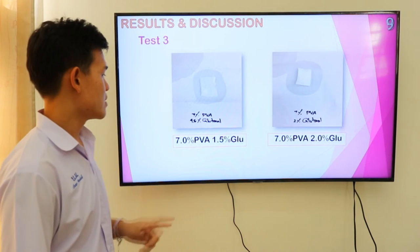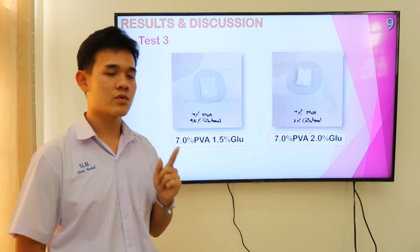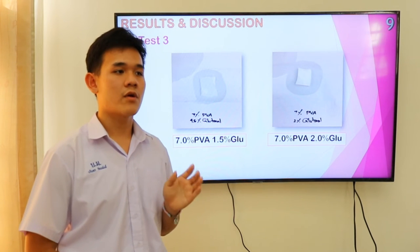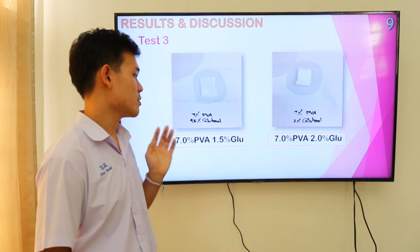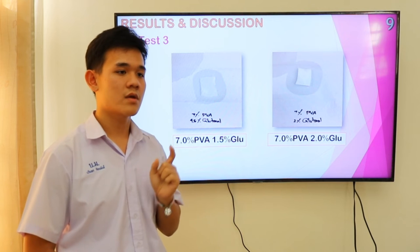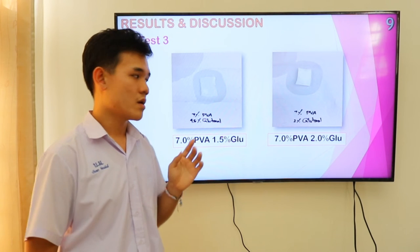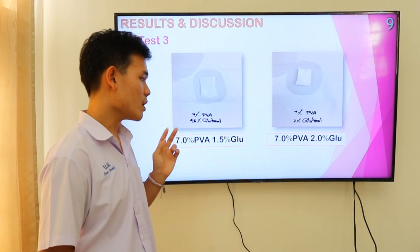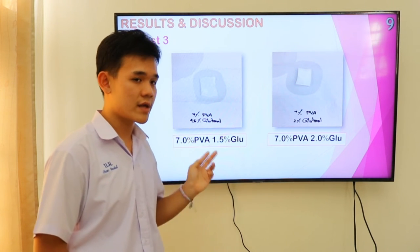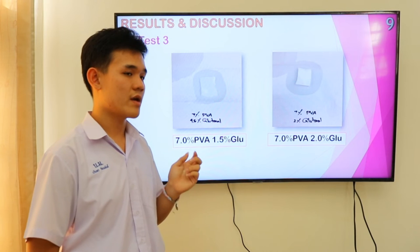In the next test, I use 3% polyvinyl alcohol with 1.5% glutaraldehyde, and 7% polyvinyl alcohol with 2% glutaraldehyde. From the results of the experiment, it was found that the membrane has high porosity but it is more brittle. If I increase the concentration to 2% glutaraldehyde, it was found that the membrane has more stiffness.